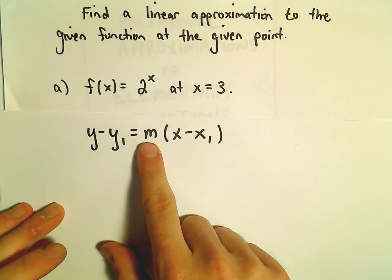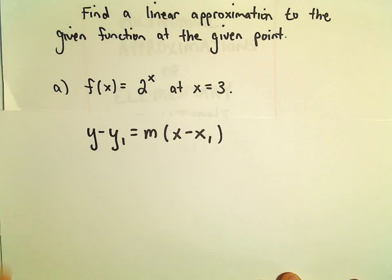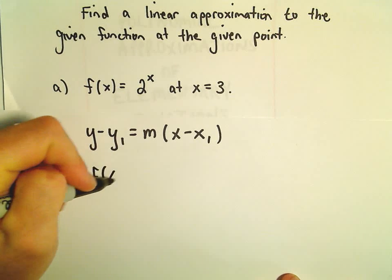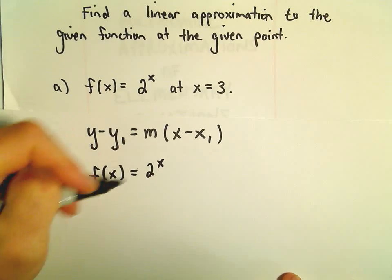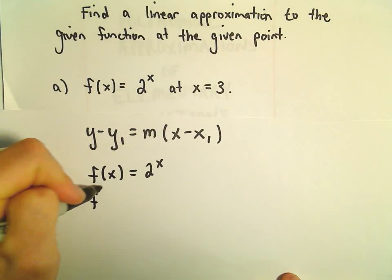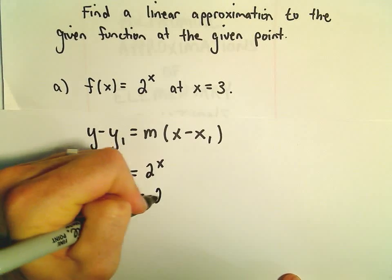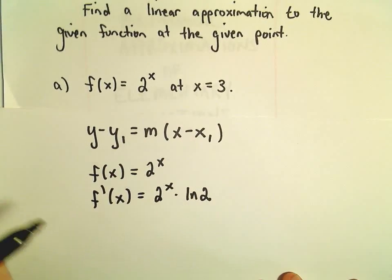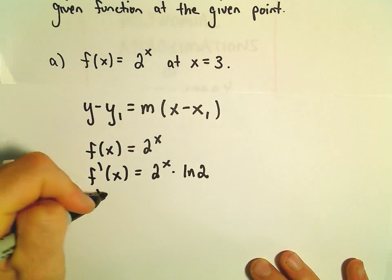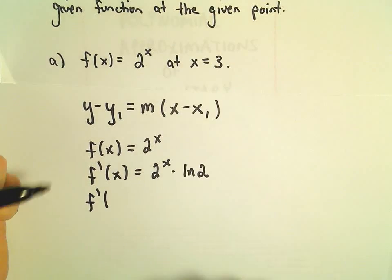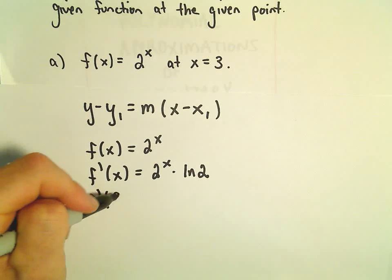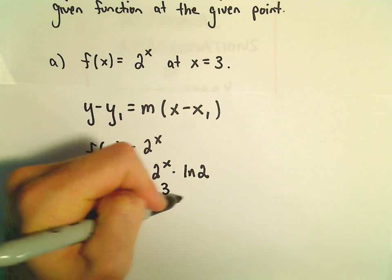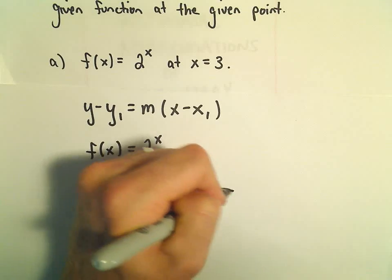Recall the slope comes from the derivative. Our function f of x is 2 to the x. The derivative of 2 to the x is 2 to the x times the natural logarithm of 2. To get the slope of our tangent line, we just plug in whatever x-coordinate we're interested in, which in this case is 3, so we'll have 2 to the 3rd times the natural logarithm of 2.